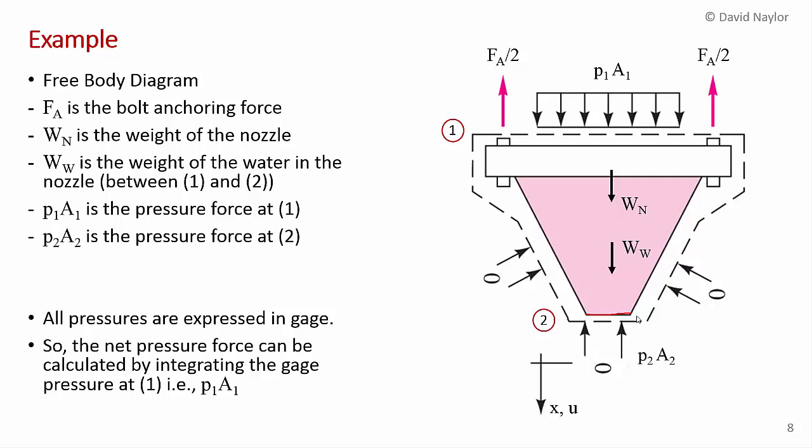And it cuts through here to where the water discharges to atmosphere. So 2 is right at the discharge point. And I've applied all the forces on here. So you can see here that we have zero gauge pressure around the outside of the nozzle, so we don't really need to take care of that.